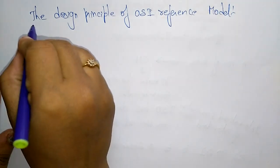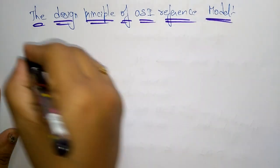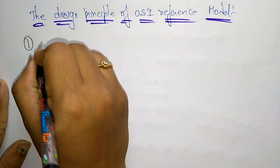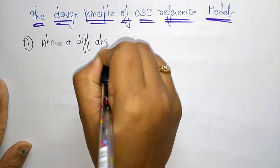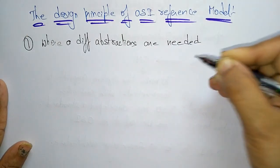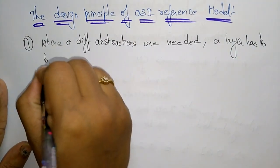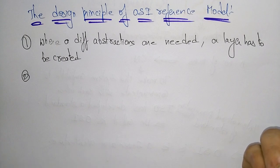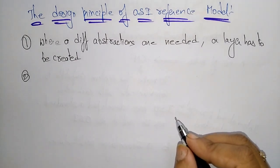Now let us see the design principles of the OSI reference model. The first principle: a layer should be created where a different abstraction is needed. So where there is a different abstraction, a layer has to be created. That is the first criteria to create a layer.